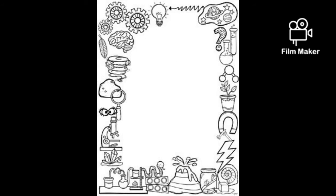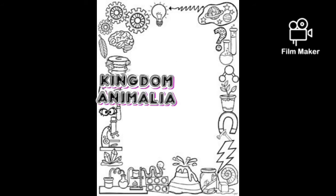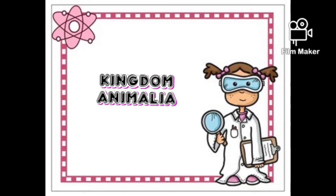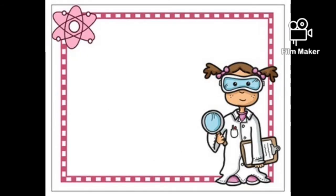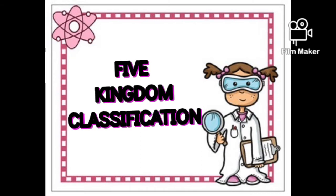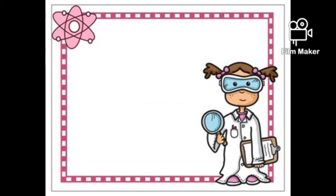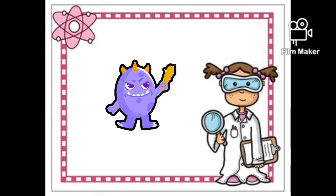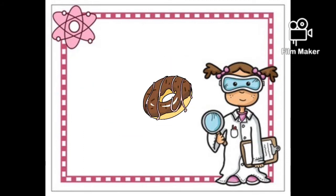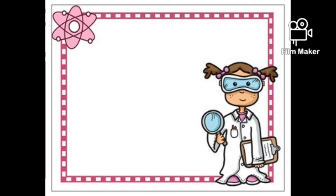Now let's learn about all of them in brief. Kingdom Animalia — I have taken this kingdom from the five kingdom classification, which was classified by R.H. Whittaker. He classified the kingdoms based on types of cells like prokaryotic or eukaryotic, unicellular or multicellular, and mode of nutrition. And there come the types of phylum.